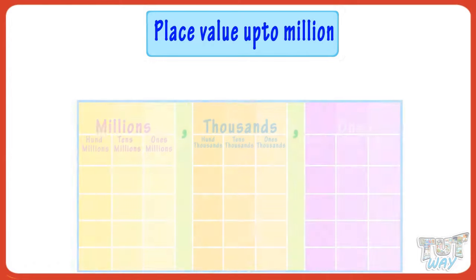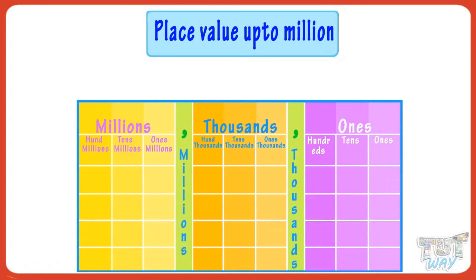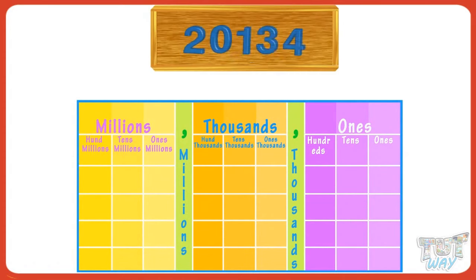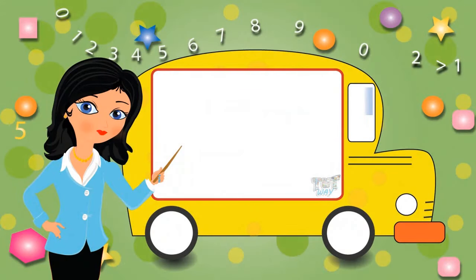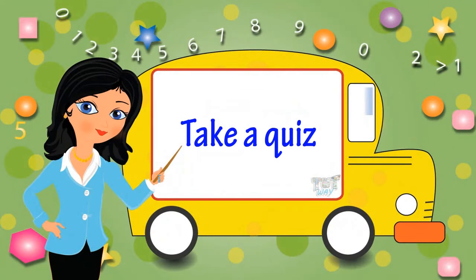So kids, after you put commas you can name the numbers easily. Just remember the names of the commas: the first comma from the left is thousands, the second comma from the left is millions. Today we learned our place value chart up to hundred millions and naming the numbers. Now go ahead and take a quiz to learn more. Bye!